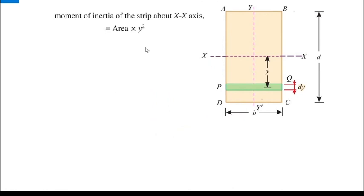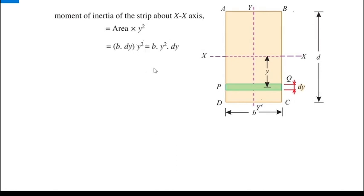Now let's write the moment of inertia of this small strip PQ. By definition, moment of inertia is area times distance squared. The reference axis is XX, so the distance is y. We can say area × y². The area of the strip is b × dy, so the moment of inertia of the strip is b·y²·dy.